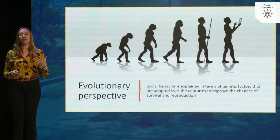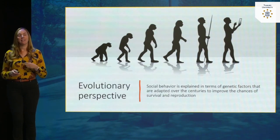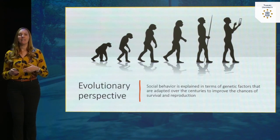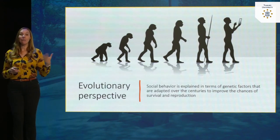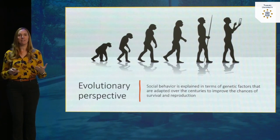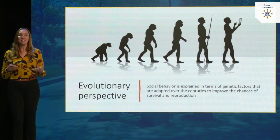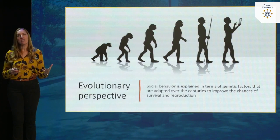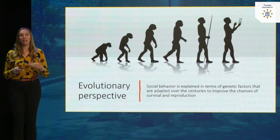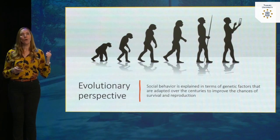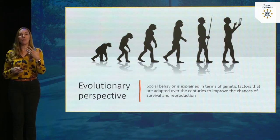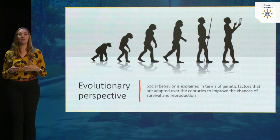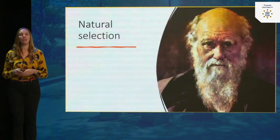Let's start with the evolutionary perspective, which you're probably already familiar with. The basic idea is that the way we behave today — the social behavior we demonstrate, the way we treat other people, the way we look at each other in social situations — is explained in terms of genetic factors adapted over centuries to improve the chance of either survival or reproduction.